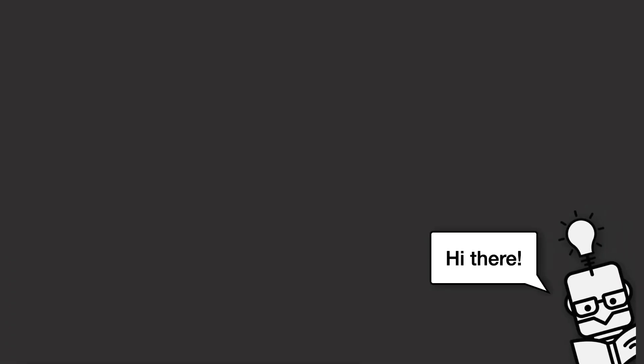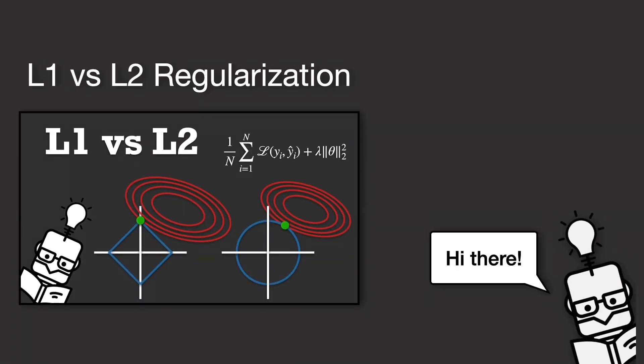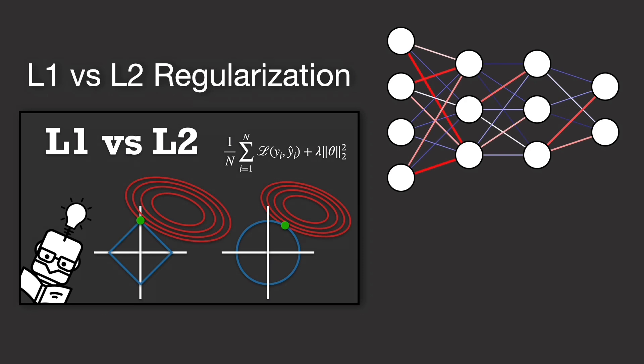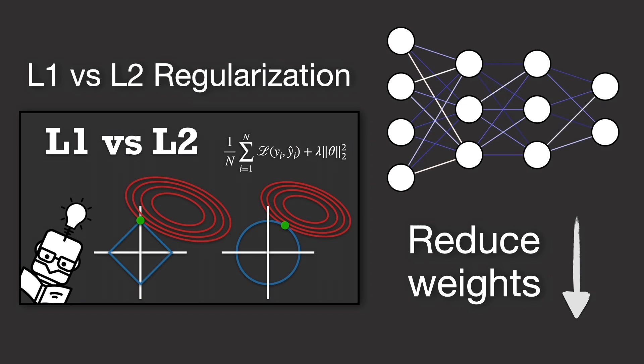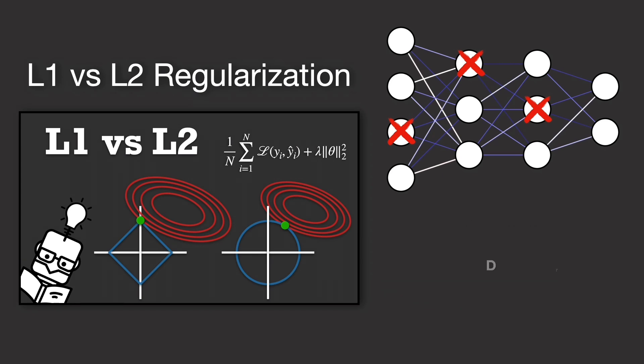Hi there! In a previous video, we talked about L1 and L2 regularization which help us prevent overfitting by penalizing large weights, effectively reducing the influence of certain connections and neurons. Today, we are going to explore another powerful regularization technique called dropout.